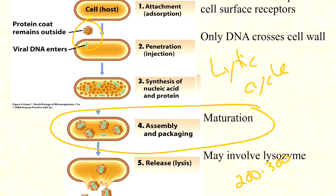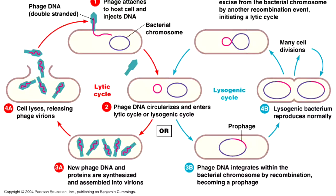More complex than the lytic cycle is the lysogenic cycle. Virulent phage are those that only have a lytic cycle; temperate phage are those that have both a lytic and a lysogenic cycle. Starting at step one, the phage attaches and injects its DNA into the host cell, which typically circularizes. Then a decision point occurs: the phage can either begin replicating immediately and lyse the cell to find a new host, or it can lysogenize the host.